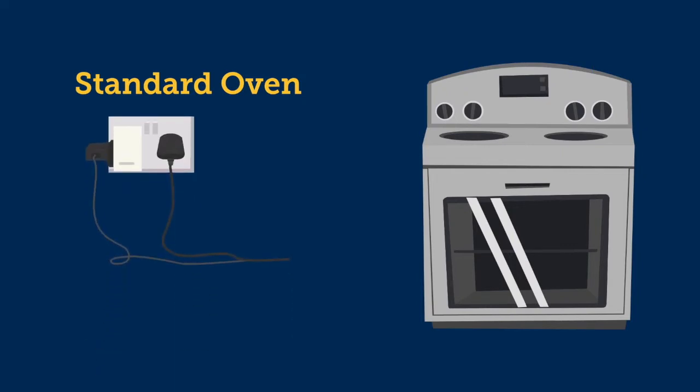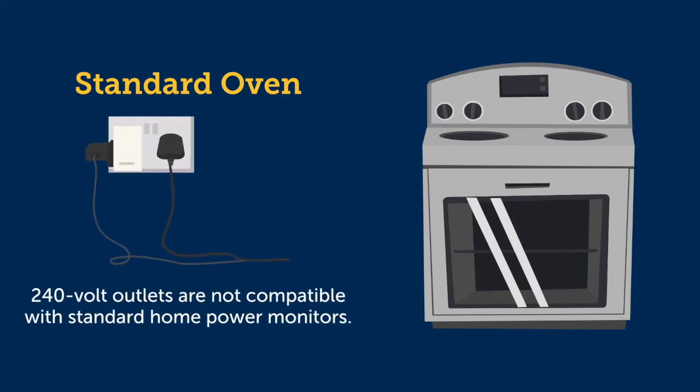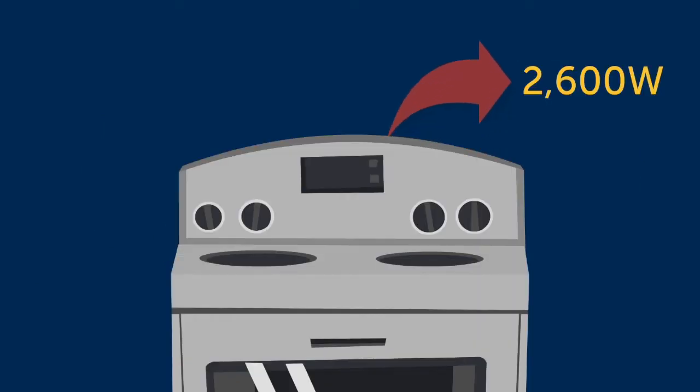Because ovens, just like dryers and some other large appliances, have a different type of outlet, we can't use the power monitor. However, by using the oven's wattage, we can easily do the calculations.